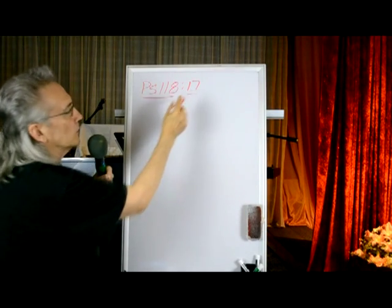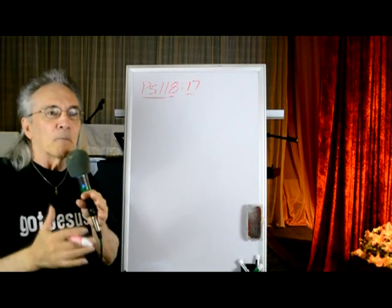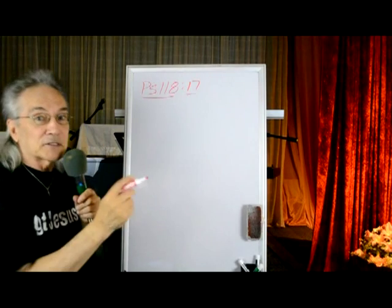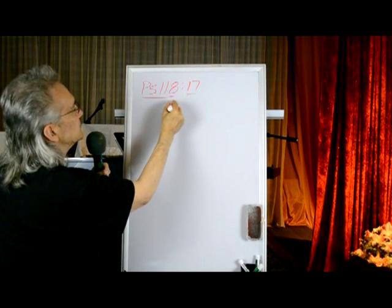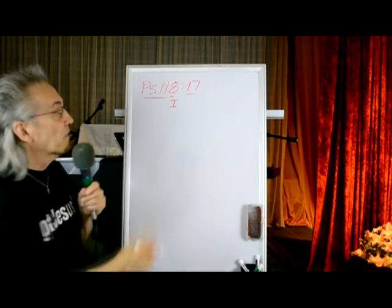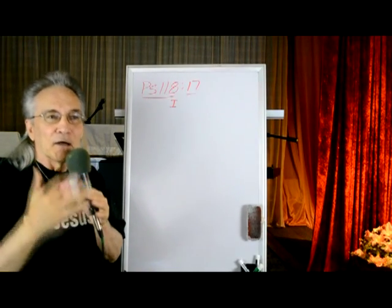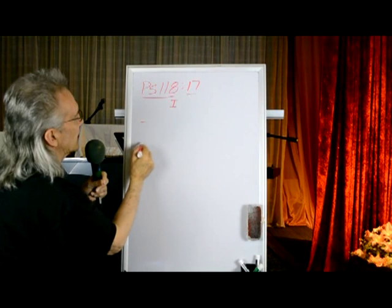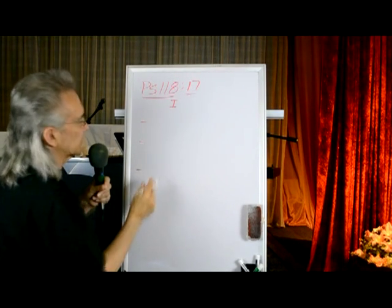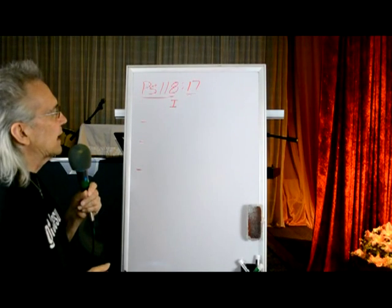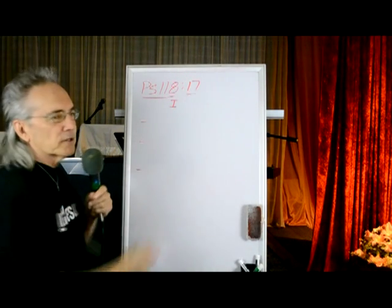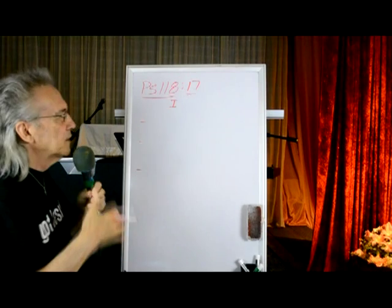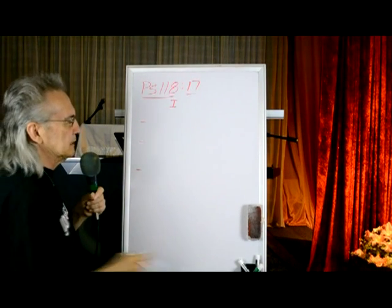The verse address also cues me as to the title — basically the first word in the verse. For Psalm 118, verse 17, it is 'I.' And that word 'I' cues me as to the other words in the verse. I'll demonstrate just a little bit, then give the basic concept of how you do this. I'm going to start at the bottom and go back, because that shows you the power of this system.